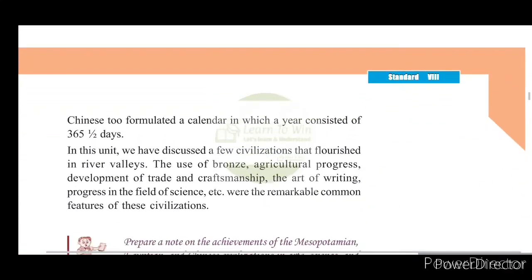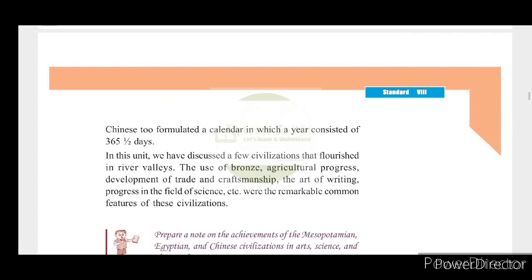The ancient Chinese also formulated a calendar. Their year consisted of 365 and a half days.